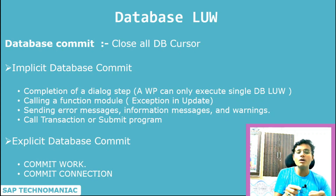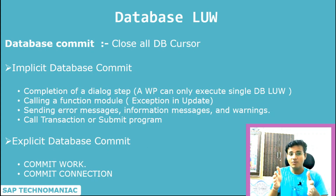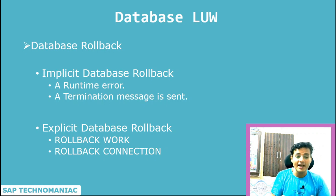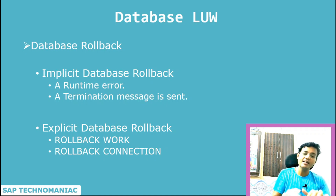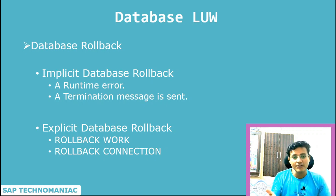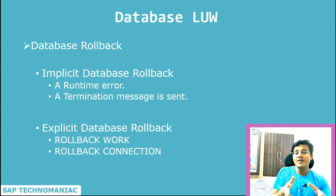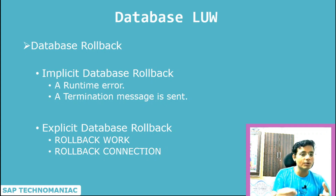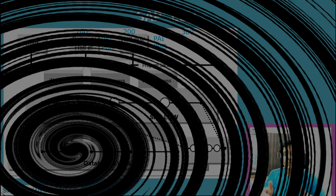Now we talk about database rollback. Database rollback also happens in two ways — implicitly and explicitly. Explicitly, when we write ROLLBACK WORK or ROLLBACK CONNECTION, the rollback happens. Implicitly, it is done by the system — whenever we get a runtime dump or error, it will automatically do the rollback. Also, when we get a termination message where the message type is 'A', that will also trigger a rollback.